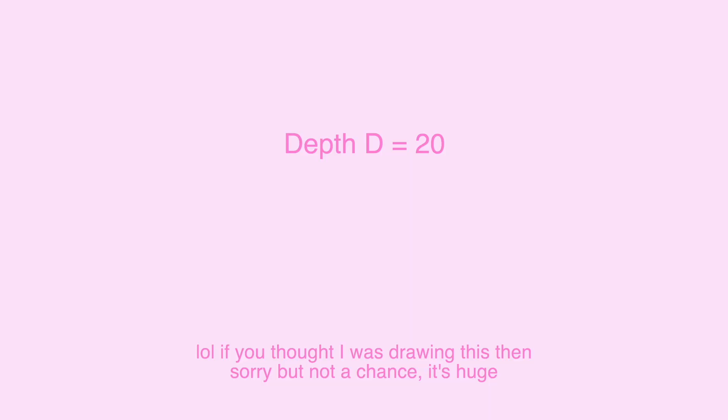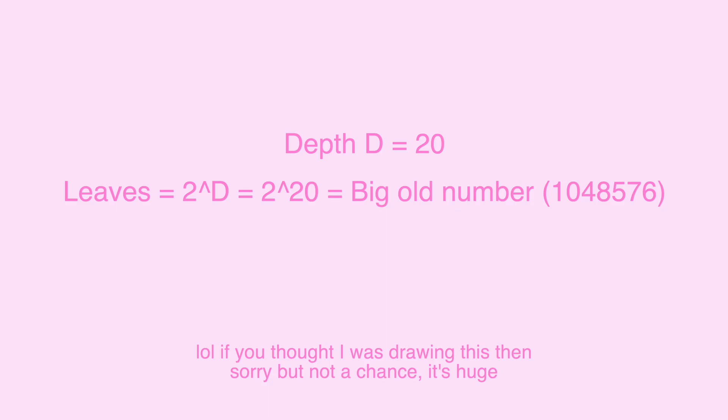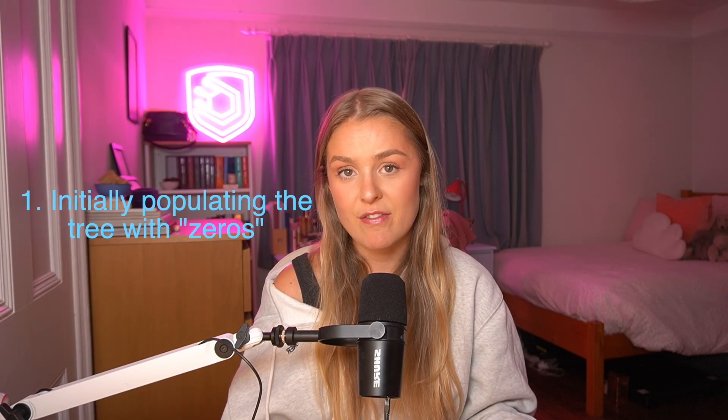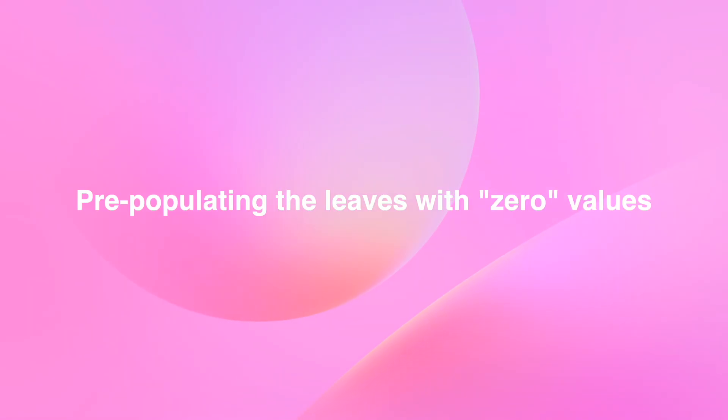Luckily, incremental Merkle trees use a combination of initially populating the tree with zero values and caching of any calculated values. We initially populate the tree with zero values and use these to calculate initial intermediate nodes and the root hash. The zero value isn't actually the number zero — it's a constant value, for instance in Tornado Cash it's the hash of the string 'tornado'. So this zero is simply a constant value. The intermediate nodes, technically called zero subtrees for every depth up to the maximum, are pre-calculated for every level up to the root hash and stored in the smart contract before deployment.